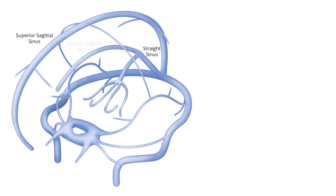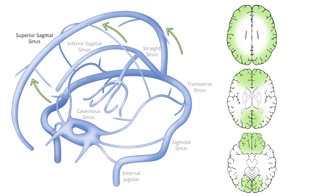To make the diagnosis of CVT, it's important to understand basic dural sinus and venous anatomy as well as the general location of venous drainage territories. The cerebral venous system is typically grouped into the dural sinuses, the superficial veins, and the deep veins. The major dural sinuses include the superior sagittal sinus, the straight sinus, the inferior sagittal sinus, the transverse sinuses, the cavernous sinus, and the sigmoid sinuses. The majority of the superior cerebrum is drained by cortical superficial veins that drain into the superior sagittal sinus.